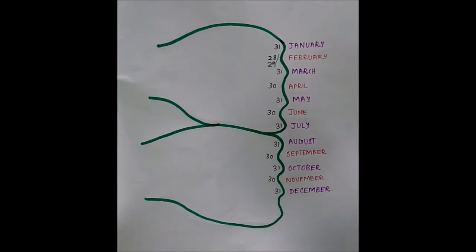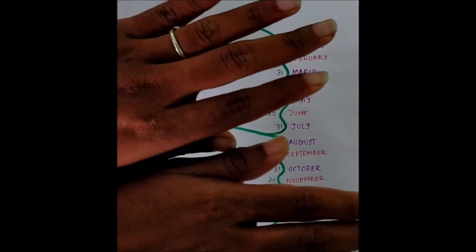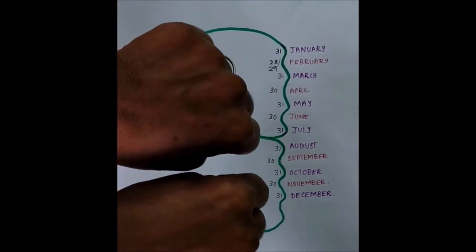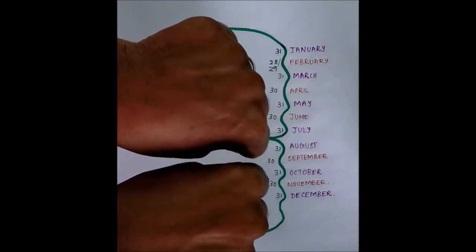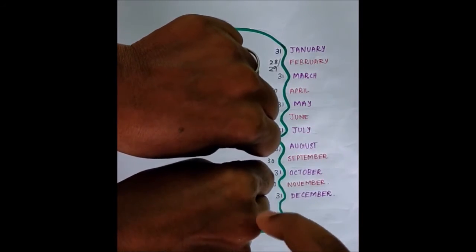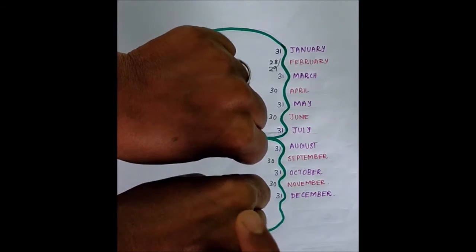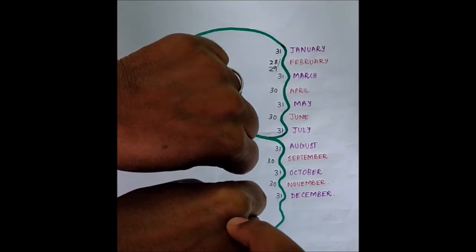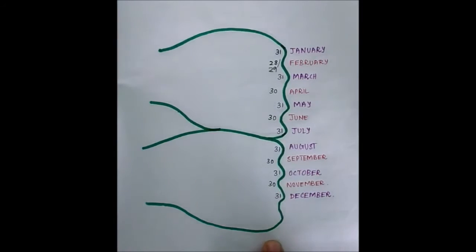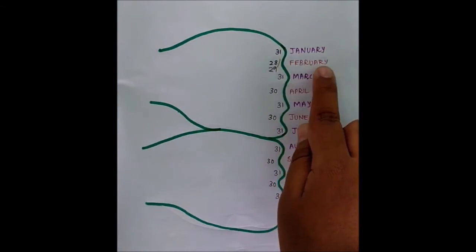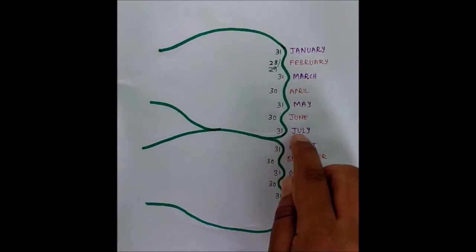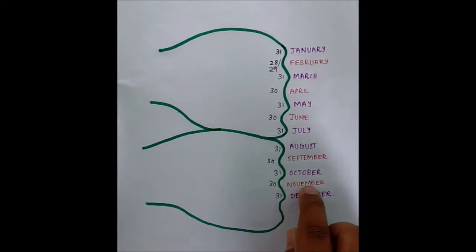Shall we see one more activity? You will all like this activity because we are going to learn the days of a month using our hand in a very easy way. Now see here — I am showing my hand. I am going to fold the fingers. You have knuckles and grooves in your hand. Knuckles means this bulged region and grooves means this lower part. We are going to learn months using these knuckles and grooves. I have drawn my hand here: January, February, March, April, May, June, July, August, September, October, November, December.